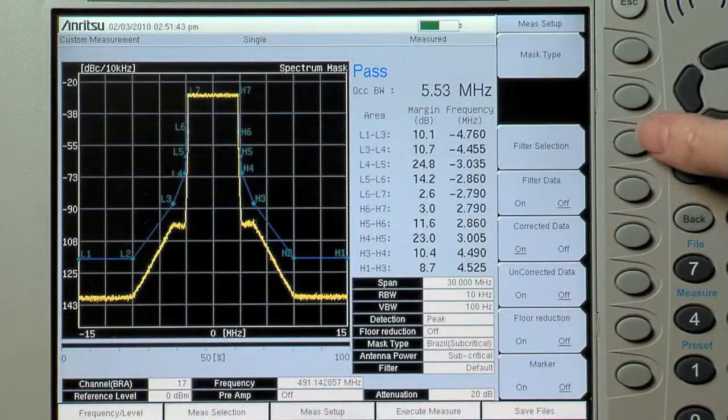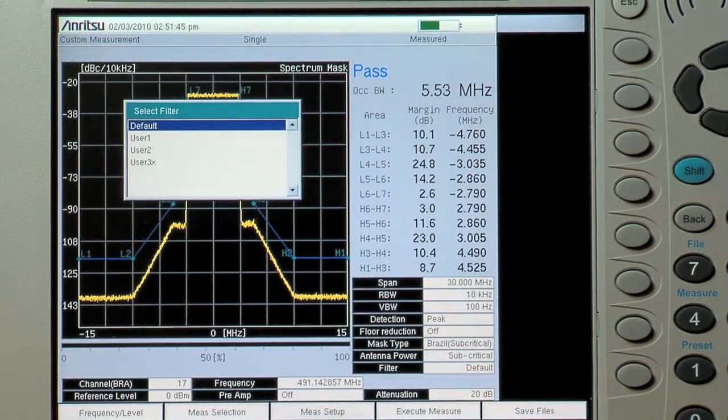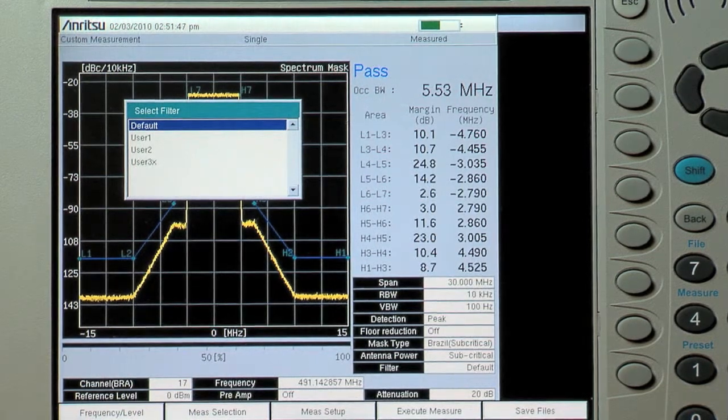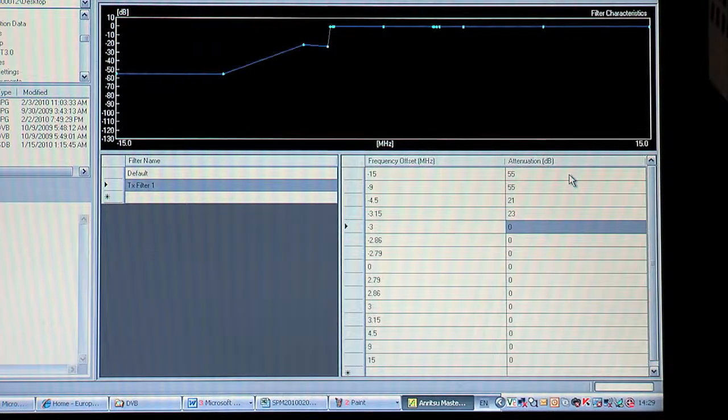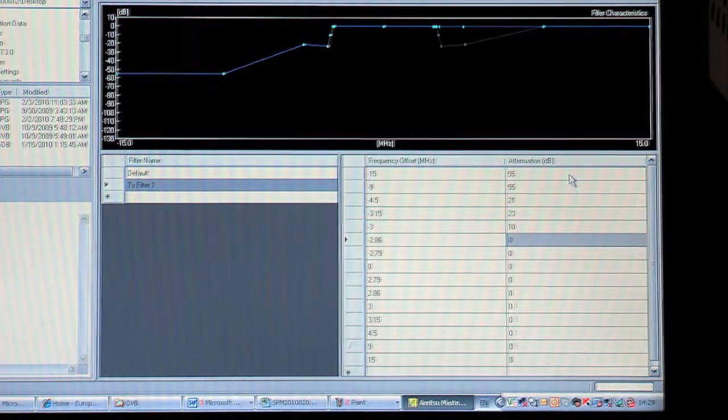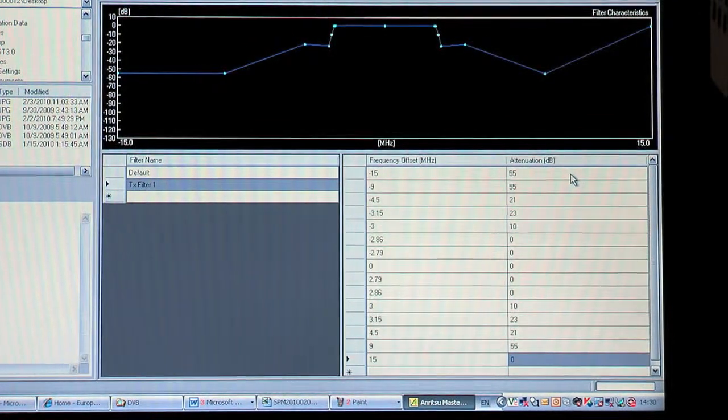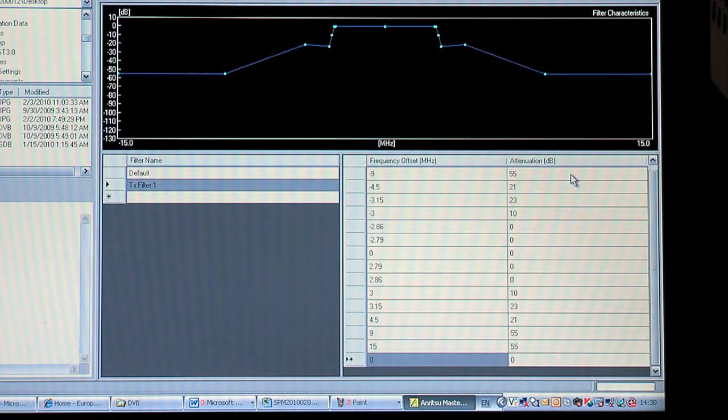By measuring first the unfiltered signal, the user can select a suitable output filter response curve to subtract from the measurement. Filter curves are easily defined using Anritsu's Master Software Tools PC software, and up to three different curves can be uploaded to the spectrum analyzer at any one time.